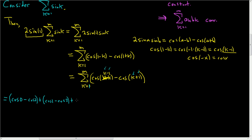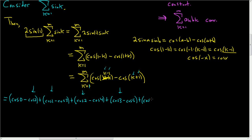Plugging in k = 4: cos(3) − cos(5). And for k = 5: cos(4) − cos(6). That's enough to see the pattern. Plus dot dot dot plus...